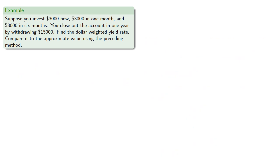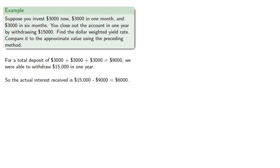For a total deposit of $9,000, we were able to withdraw $15,000 in one year. So the actual interest received was $6,000. Now, let's consider the interest received on the $3,000 deposited initially, that accrued interest for the full year. And so the interest will be... So we can write the approximate equation: the $6,000 interest is the interest from the first deposit.